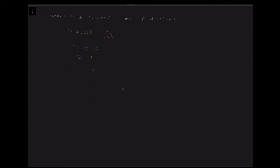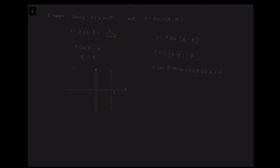For the second graph, r equals a sec(alpha minus theta), we use the trigonometric identity: cos(alpha minus theta) equals cos theta cos alpha plus sin theta sin alpha. Expanding gives r cos theta cos alpha plus r sin theta sin alpha equals a. Since r cos theta equals x and r sin theta equals y, substituting gives x cos alpha plus y sin alpha equals a. Rearranging into y equals mx plus c form, this is a straight line where the x-intercept is a sec alpha and the y-intercept is a cosec alpha.